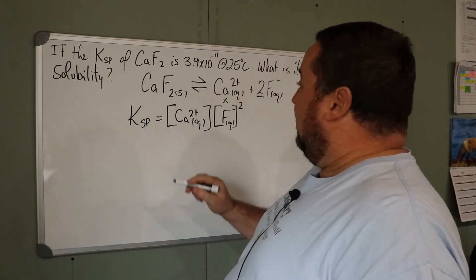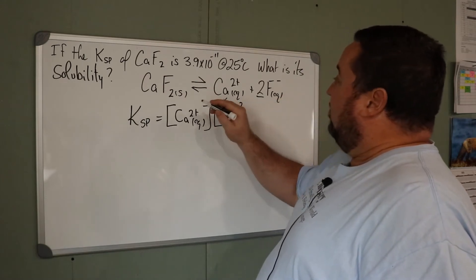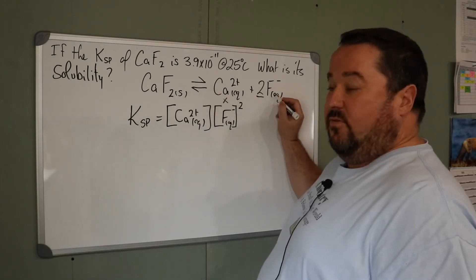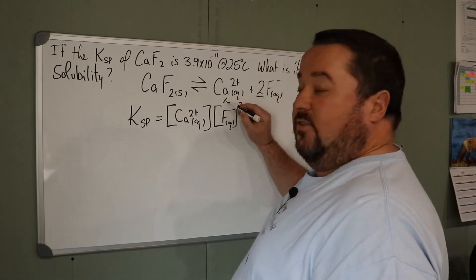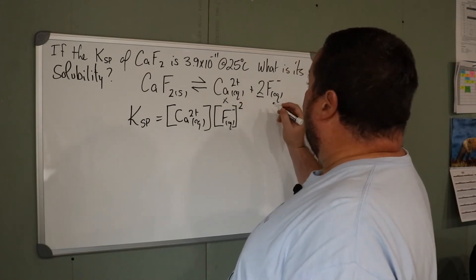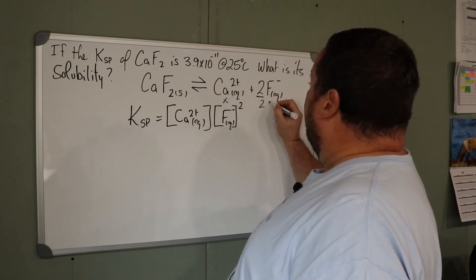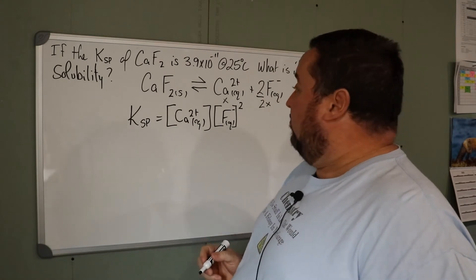The calcium ion is one-to-one. Its amount would be X, but in the forward reaction it produces one calcium and two fluoride. So if X is the concentration of the calcium, then the fluoride ion would have a concentration of 2X.